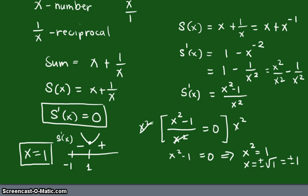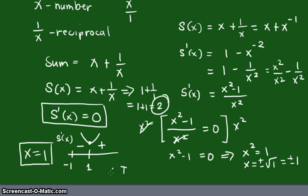Keep in mind what we want is the sum, not just x. So if x = 1 gives the minimum, then the minimum value is S(1) = 1 + 1/1 = 1 + 1 = 2. The minimum value occurs at x = 1 and the minimum value is 2.